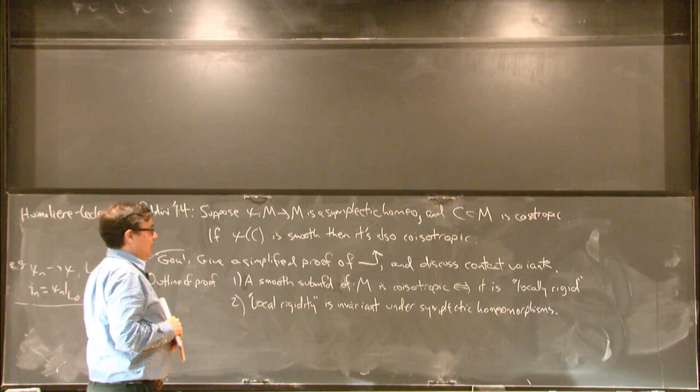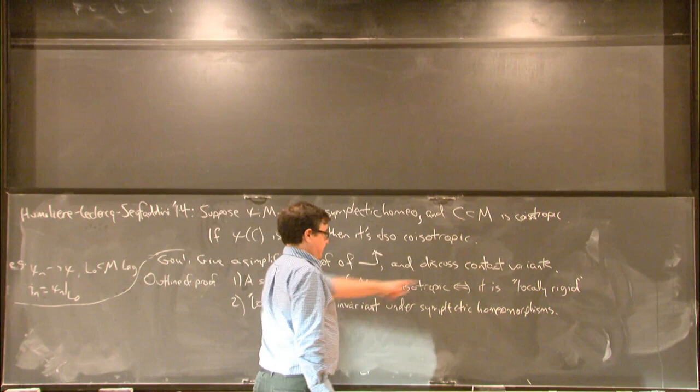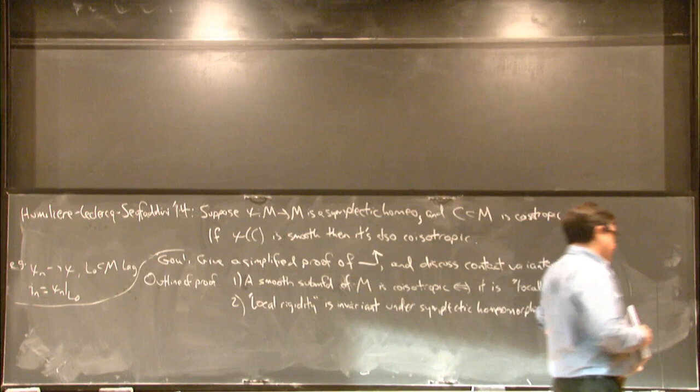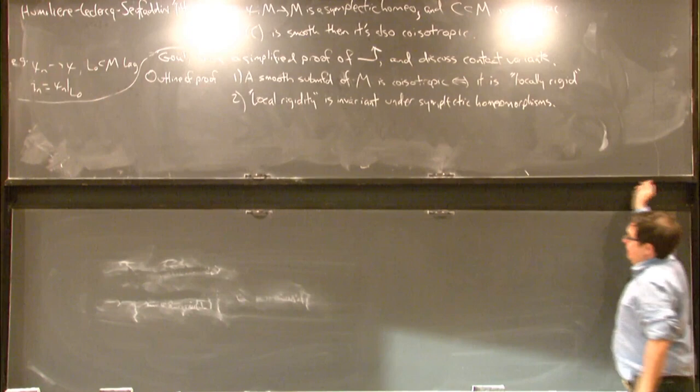So if you trust that I'm going to do these two things, you should agree that I will have given a proof of this theorem. Suppose I have a symplectic homeomorphism and a co-isotropic sub-manifold; then that sub-manifold is locally rigid according to part one, therefore psi of the sub-manifold is locally rigid according to part two, therefore psi of the sub-manifold, given that it's smooth, would be co-isotropic.